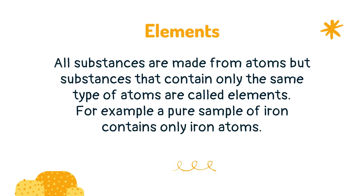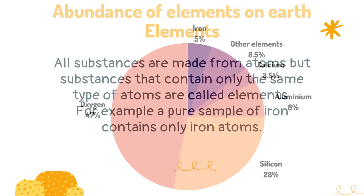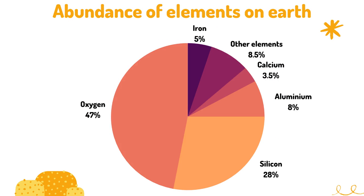All substances are made from atoms, but substances that contain only the same type of atoms are called elements. For example, a pure sample of iron contains only iron atoms. This chart shows the abundance of elements in the earth's crust.